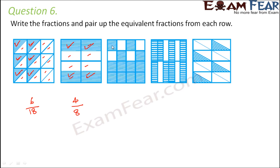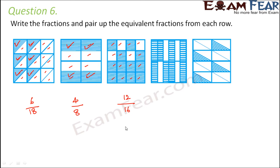Third one — here again we have squares: 1, 2, 3, 4, 5, 6, 7, 8, 9, 10, 11, 12, 13, 14, 15, 16. So total 16 squares, and how many are shaded? 12 of them are shaded. So it is 12 by 16.